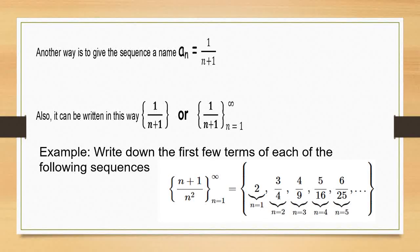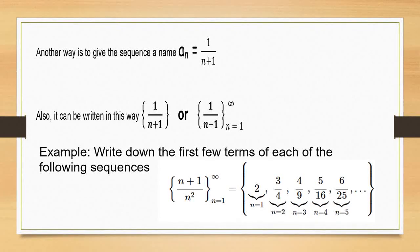Another way to write a sequence is to give it a name. For example, a_n is usually used instead of f_n. So a_n equals 1 over (n+1). There are also other books that write the sequence in bracket notation with the general formula, indicating that n will start at 1 and end at infinity.